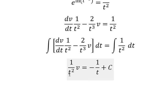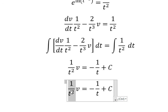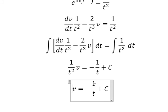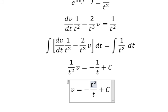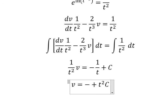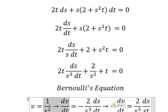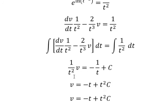We multiply both sides by t squared. So we have 2 over t, giving us t. Solving for v, which equals 1 over h squared.